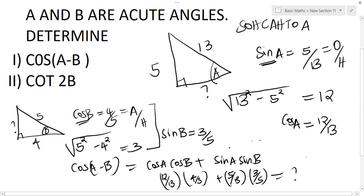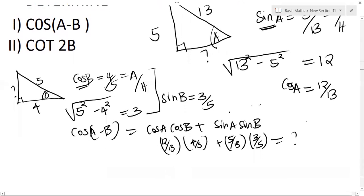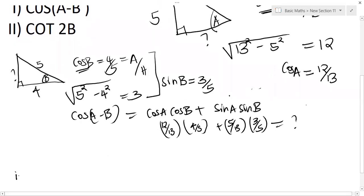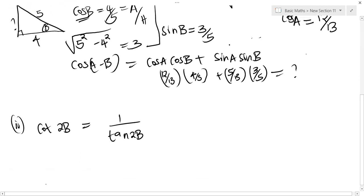Now for the next part to get cot 2B. Cot 2B, now recall cot is the same as 1 over tan 2B. And what is tan 2 theta? The expression for tan 2 theta, you can rewrite this as 1 over the expression for tan 2B.